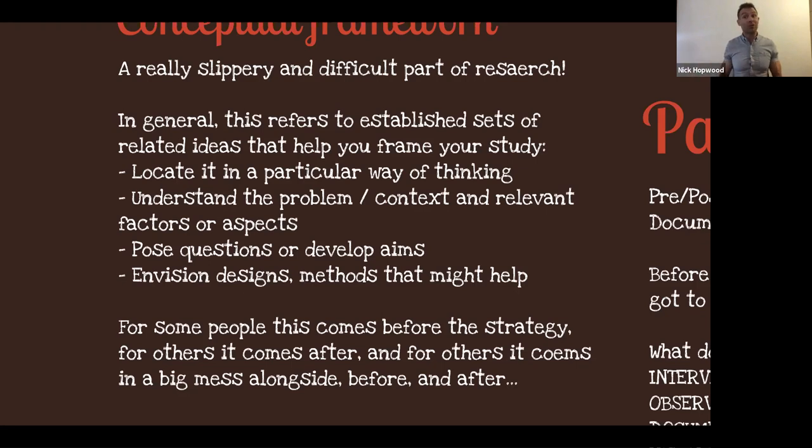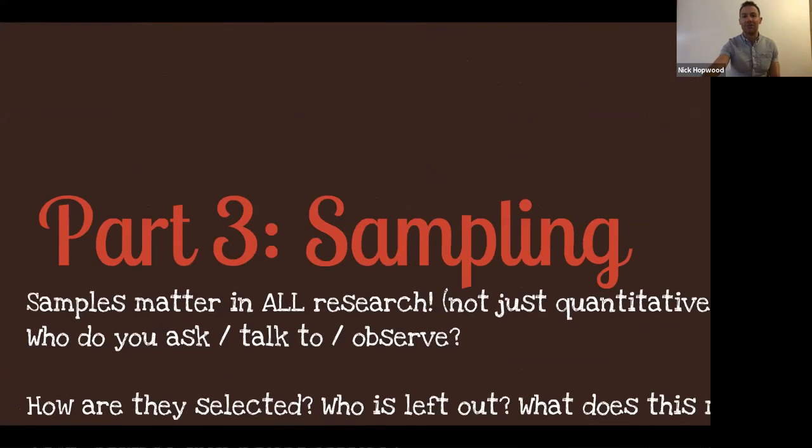The framework might help you envision designs and methods. If you're doing practice theory like I do a lot of, certain methods tend to be favored. Sometimes theories and methods collapse onto the other. Actor-network theory is a really good example of that. It's a whole methodology wrapped together, the theory and how you do the research and the analysis, all in one package. For some people, the strategy comes and then the theoretical or conceptual framework. For others, it's the other way round. And for others, the conceptual framework, whatever it is, comes in a big mess alongside, before, and after the study. That was my experience. But it's often important to have one. It's important to think about that as being one of the things that lines up in that nice plumb aligned design and research.